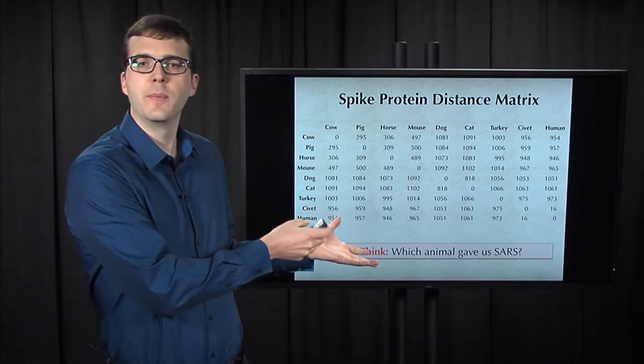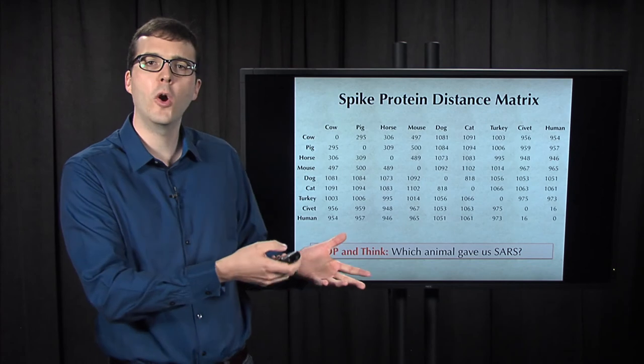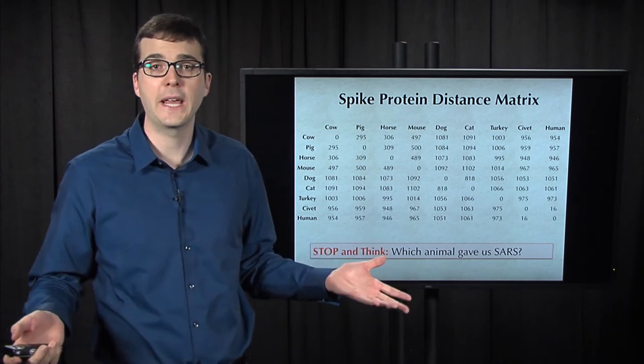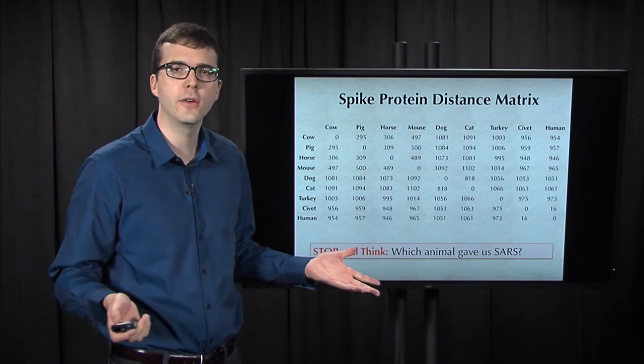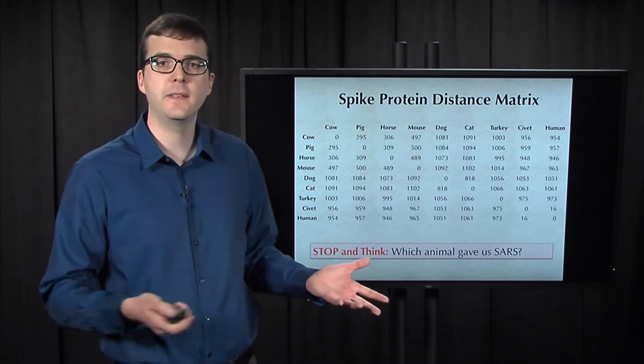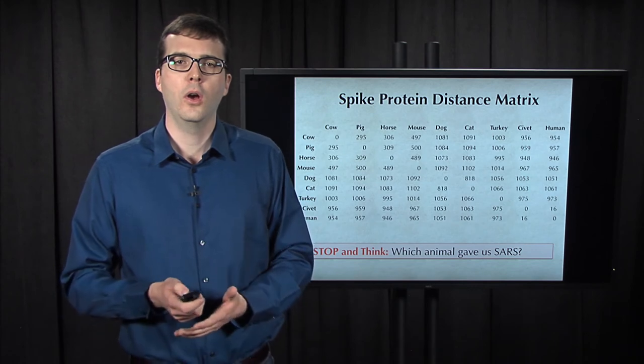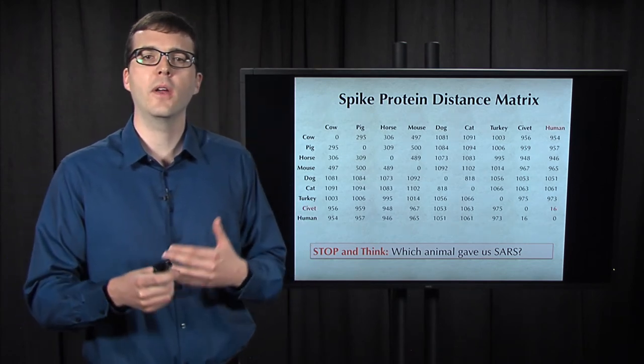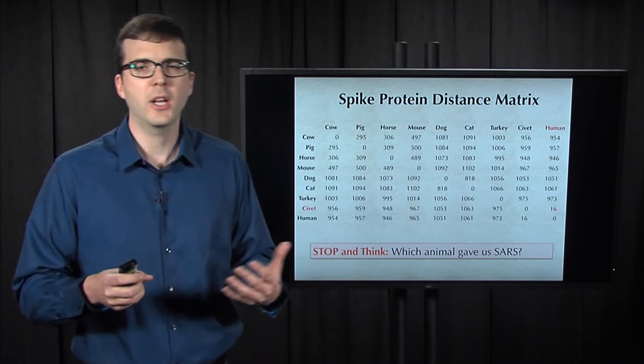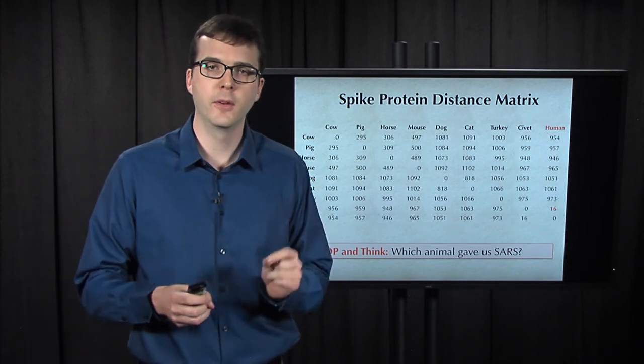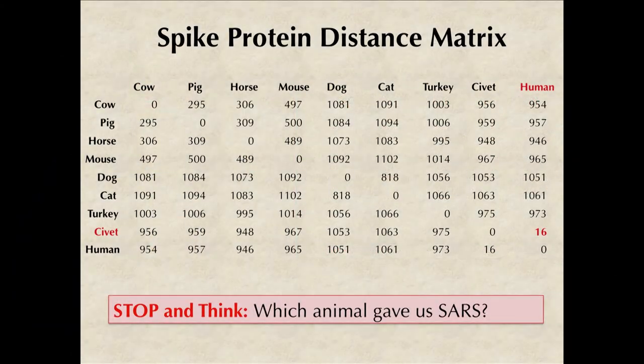Just from this distance matrix, I would hope that we should have a pretty strong guess which animal gave us SARS because there's one species that's much closer to humans than the rest of the species. Of course, we should be wary of jumping to this conclusion because we already know that the smallest element of a distance matrix doesn't necessarily correspond to neighboring leaves.